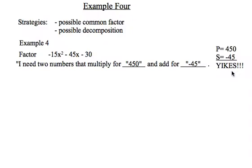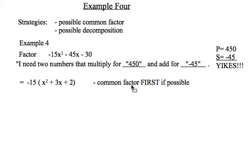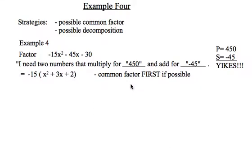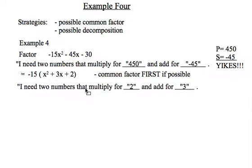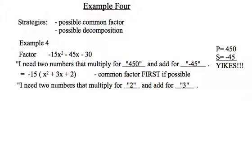So in this case, I'm going to factor out a negative 15. There it is up front. And you can see that now the trinomial inside is very small. And when I apply my guiding sentence, I need two numbers that multiply for 2 and add for 3. Those are a lot easier to find than multiply for 450 and sum for negative 45.